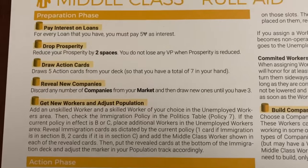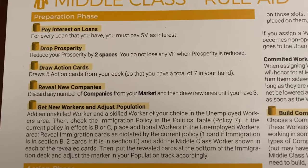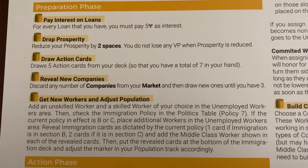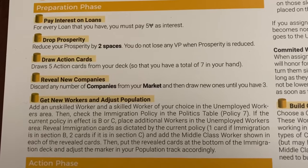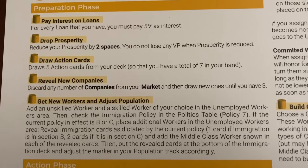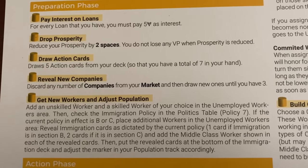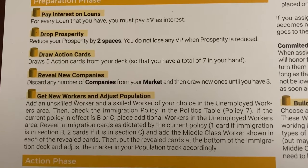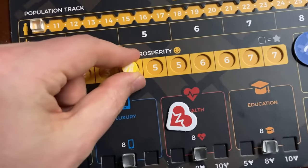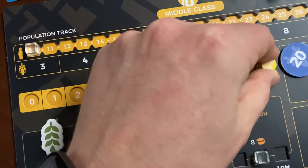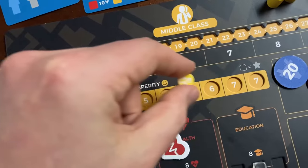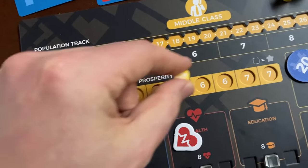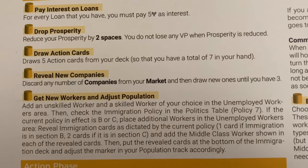Phase one is the preparation phase, which does not happen in round one but happens in rounds two through five. First, if the middle class has taken out any loans they need to pay five cash as interest each turn. They also have to drop their prosperity by two spaces each round, so while you're moving the prosperity token up each round to gain victory points, you also have to pull it back two spaces.